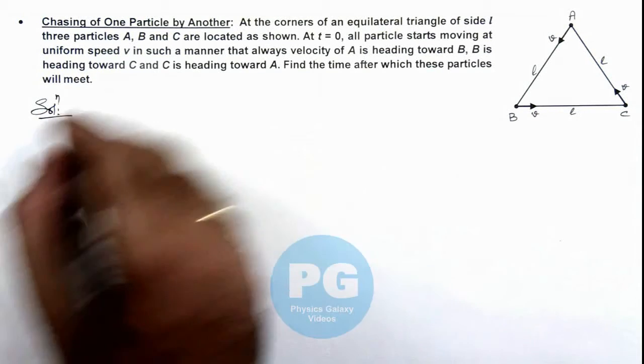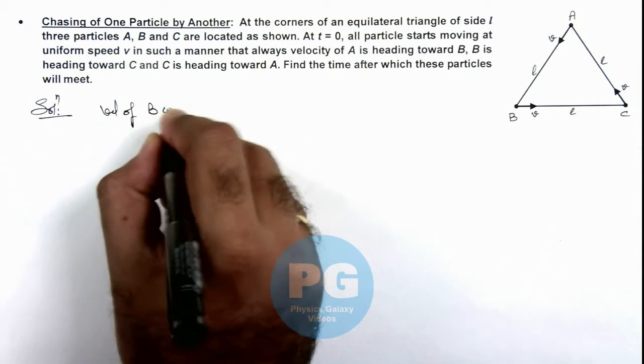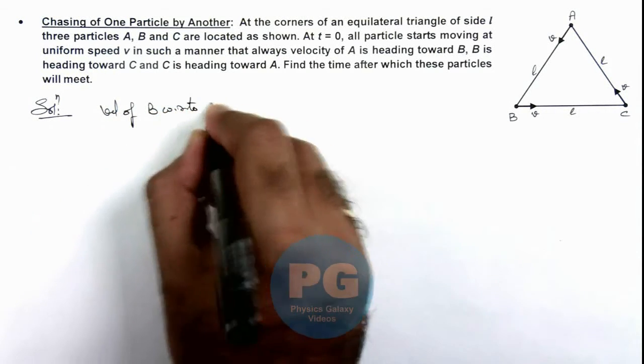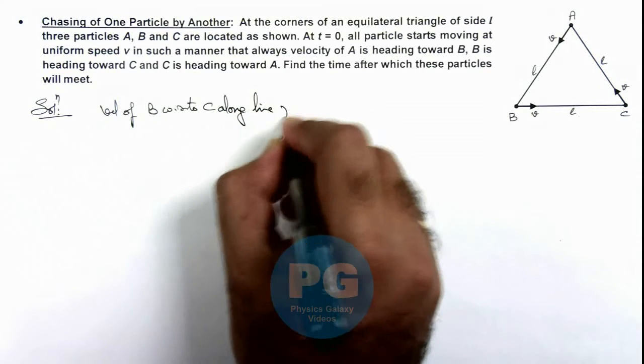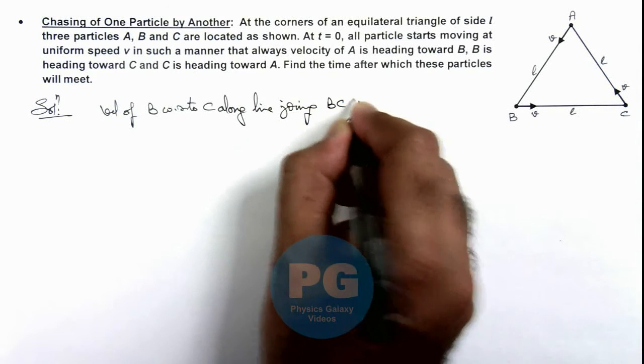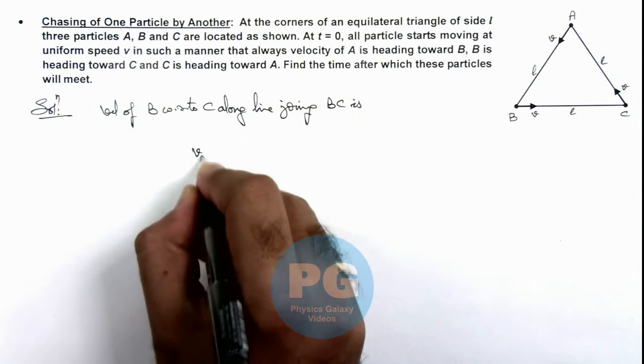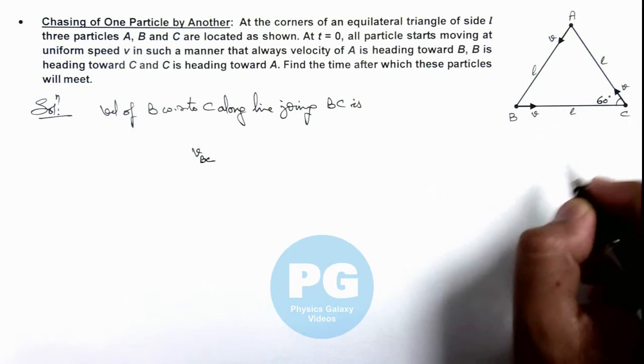Here, we can directly calculate the velocity of B with respect to C along line joining BC. The velocity of B with respect to C, if we calculate it, as being an equilateral triangle, this angle is 60 degree.